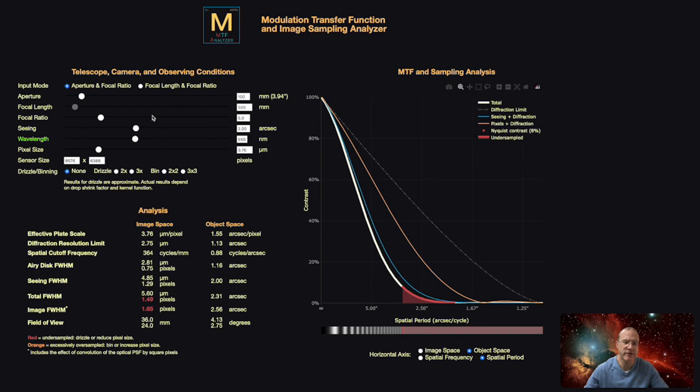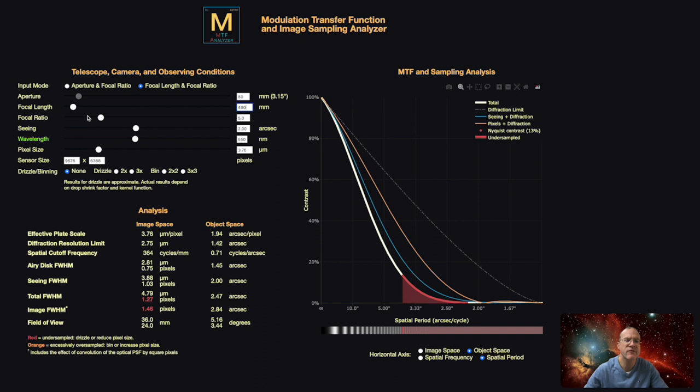First, here we have to enter the data of our telescope, either the one we have or the one we want to look at. So, either we go with Aperture and Focal Ratio, or Focal Length and Focal Ratio. I rather like to go with Focal Length and Focal Ratio. So, let's start with something. I start with an easy one, my Askar 400. So, we have 400 millimeters and a focal ratio of F5.6.